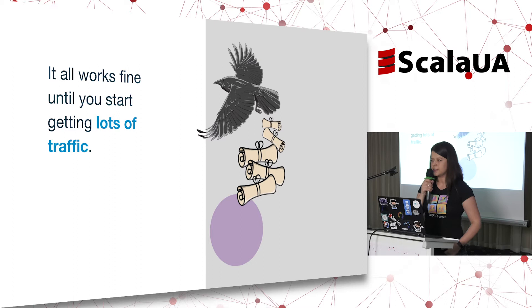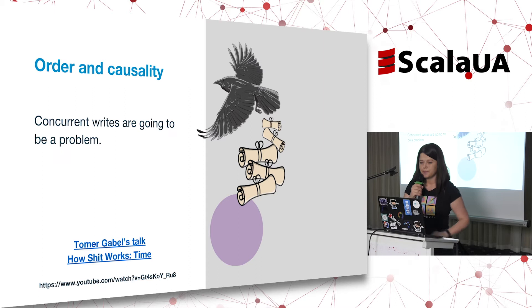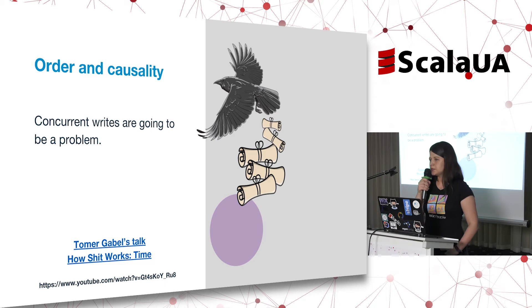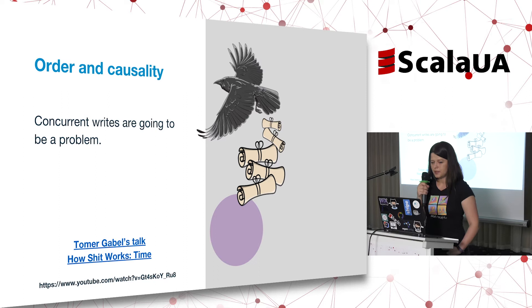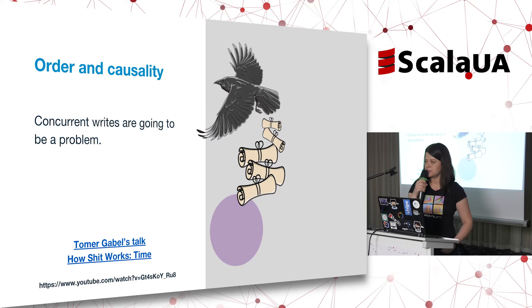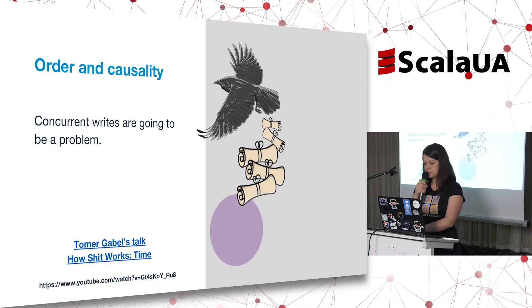This whole thing works just fine until you start getting lots of traffic. Once you get into production, you'll have lots of commands coming in and lots of events being generated at the same time, and you're going to get race conditions. It's very important in event sourcing to keep the order of events and causality. I suggest you watch Tomer Gabel's amazing talk 'How Shit Works on Time' — he takes 40 minutes to explain how time works on computers. It's really great.